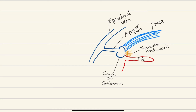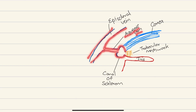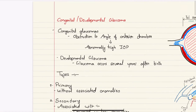Let's briefly discuss the drainage system of aqueous humor. Here the cornea and iris form the iridocorneal angle, and the anterior chamber is filled with aqueous humor. At the base of the iridocorneal angle is the trabecular meshwork. Through the trabecular meshwork, aqueous humor flows into the canal of Schlemm, and from there it drains through the aqueous veins into the episcleral veins.